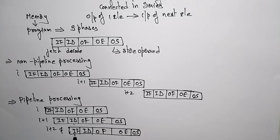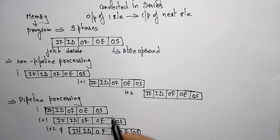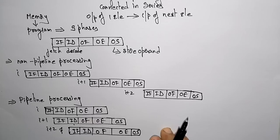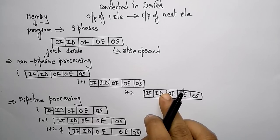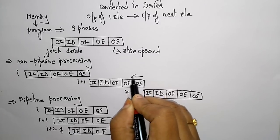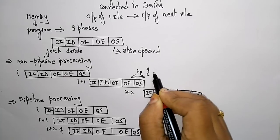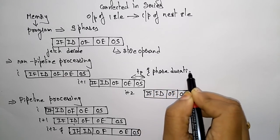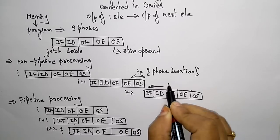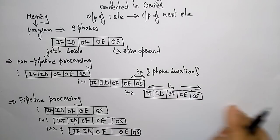Here each phase will be different. Whatever instructions you take from memory, the phases are not coinciding with each other. One instruction is in operand fetch stage, another is in instruction decode, and another is in instruction fetch — all in different phases. This is called phase-wise interleave, whereas the non-pipelining approach is called instruction-wise interleave. Here TP is the phase duration — how much time is taken for each phase — and TN is the total instruction duration.